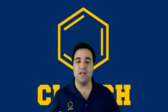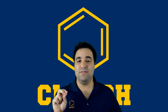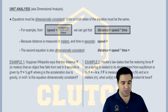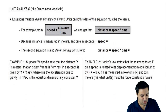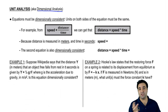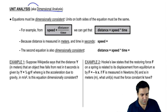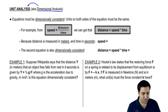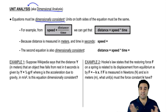Hey guys, we're now going to talk about unit analysis, which is the idea that equations must have unit consistency. Unit analysis is also known as dimensional analysis. In chemistry, dimensional analysis means an entirely different thing — it's the way by which you convert units. But in physics, dimensional analysis often refers to unit analysis, which is the idea that equations must be dimensionally consistent. The units on both sides of the equation have to be the same.